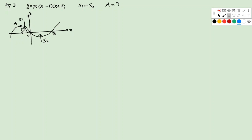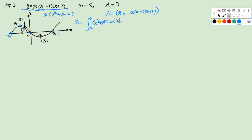The next question is on page 173 of the textbook. The curve has zeros at x = −2, 0, and 1, and we have two equal areas S1 and S2. We want to find point A's coordinates. Let A = (a, y_a). For S1, integrate from a to 0 of (x³ + x² − 2x) dx, giving [x⁴/4 + x³/3 − x²] from a to 0, which equals −a⁴/4 + a³/3 − a².